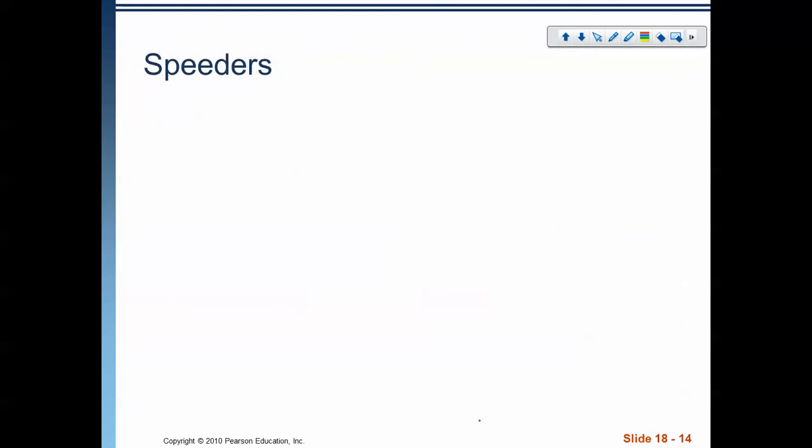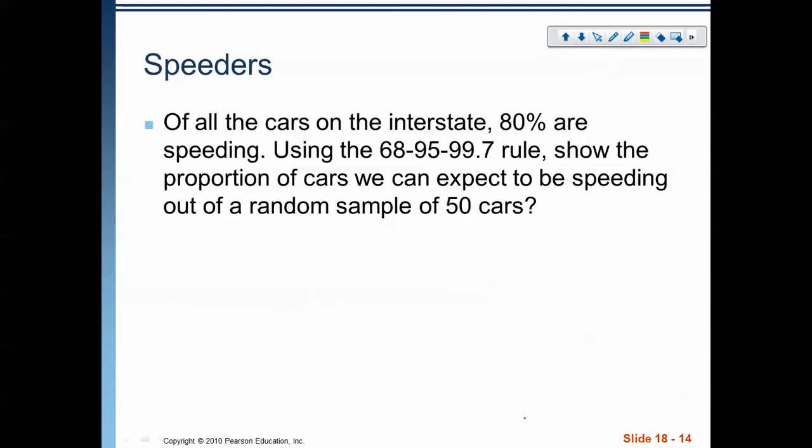So, let's look at an example. Here we have our situation. Of all cars on the interstate, 80% are speeding. Let's use the 68-95-99.7 rule to show the proportion of cars we can expect to be speeding out of a random sample of 50 cars. Now, this thing that I underlined here is a very important key phrase. When we say that there's a random sample of this many cars, that's kind of a key word that we're talking about a sampling distribution.